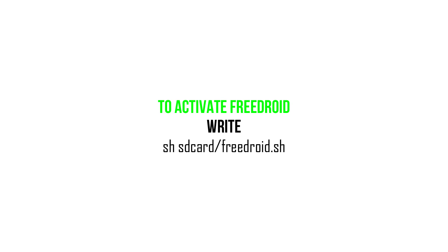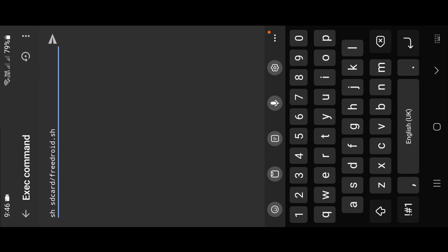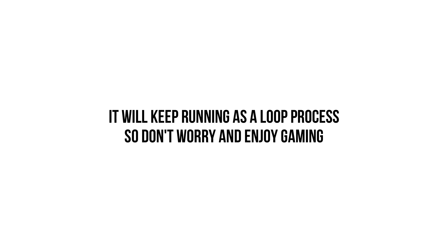To activate FreeDroid, write: sh space sdcard slash freedroid dot sh. FreeDroid has been activated. Close Prevent from reset apps and start playing your desired game. It will keep running as a loop process, so don't worry and enjoy gaming.